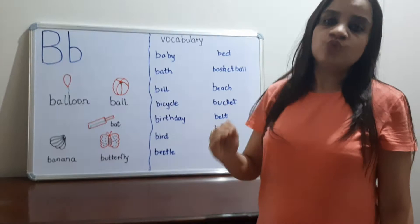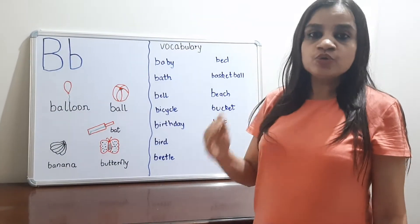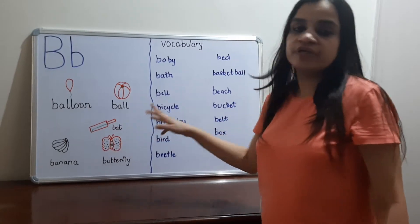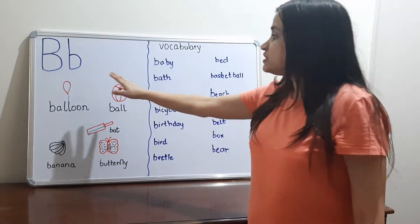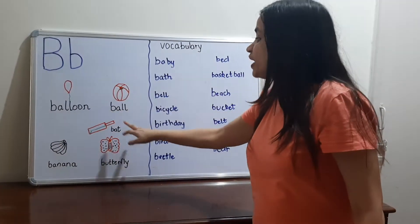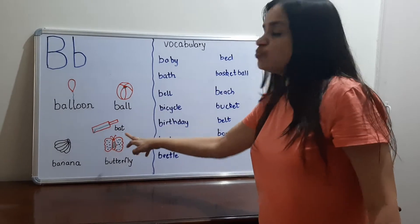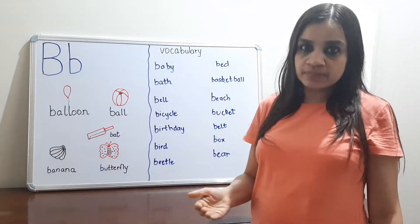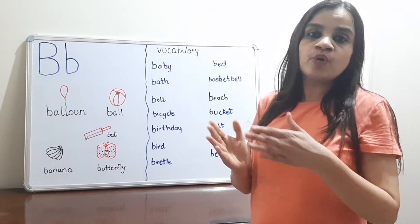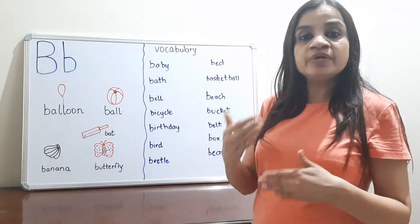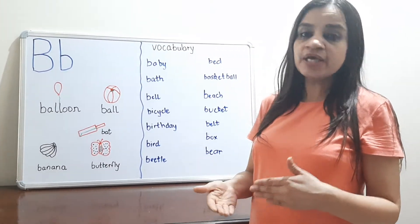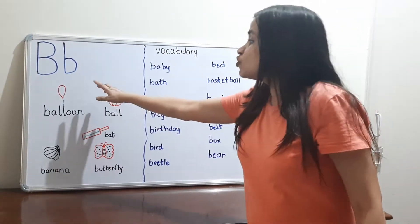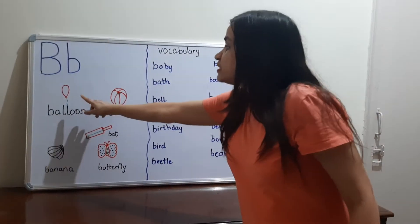After writing the alphabet B and telling the sound of B — that is 'burp' — to your child, you can draw pictures of the words related with letter B. We will make pictures of these words and then write their spellings below. As I mentioned in the last video, if we write the spelling, the child reads very quickly because they are watching the alphabet again.